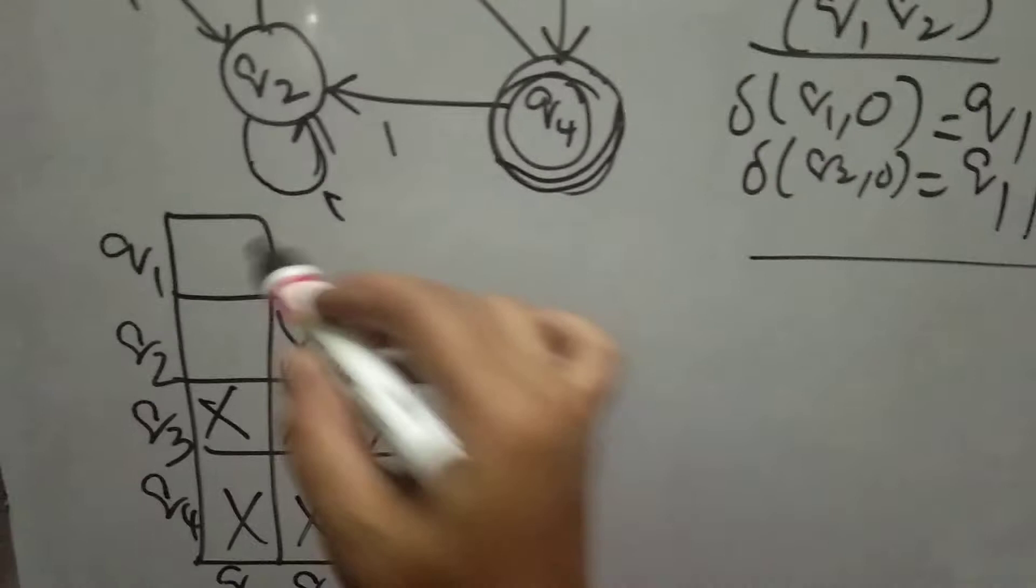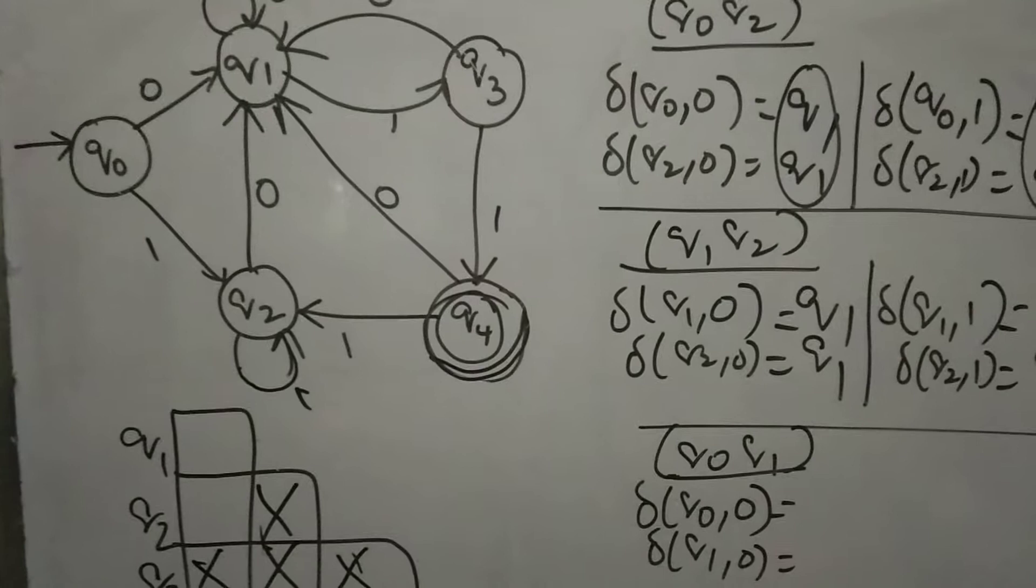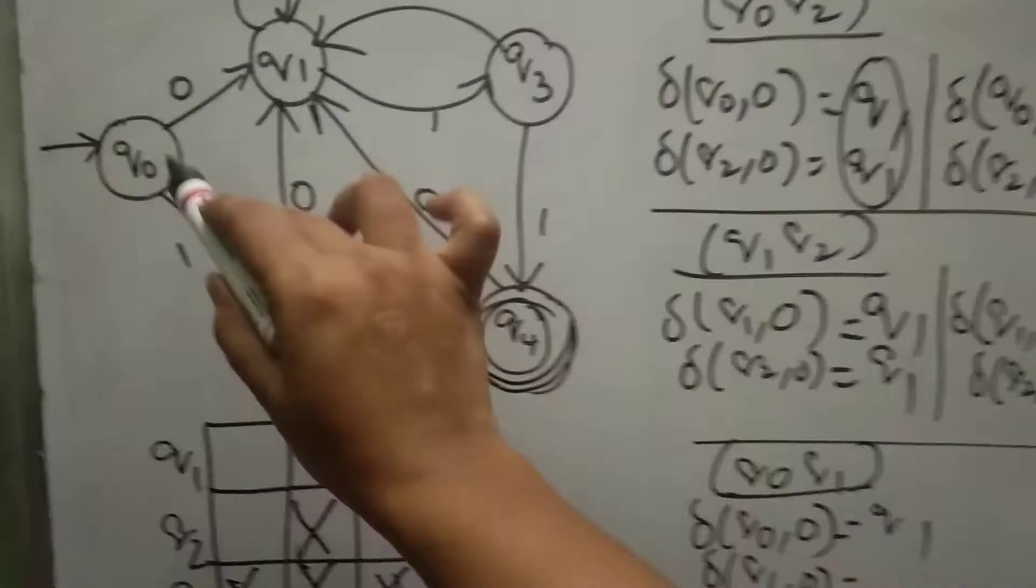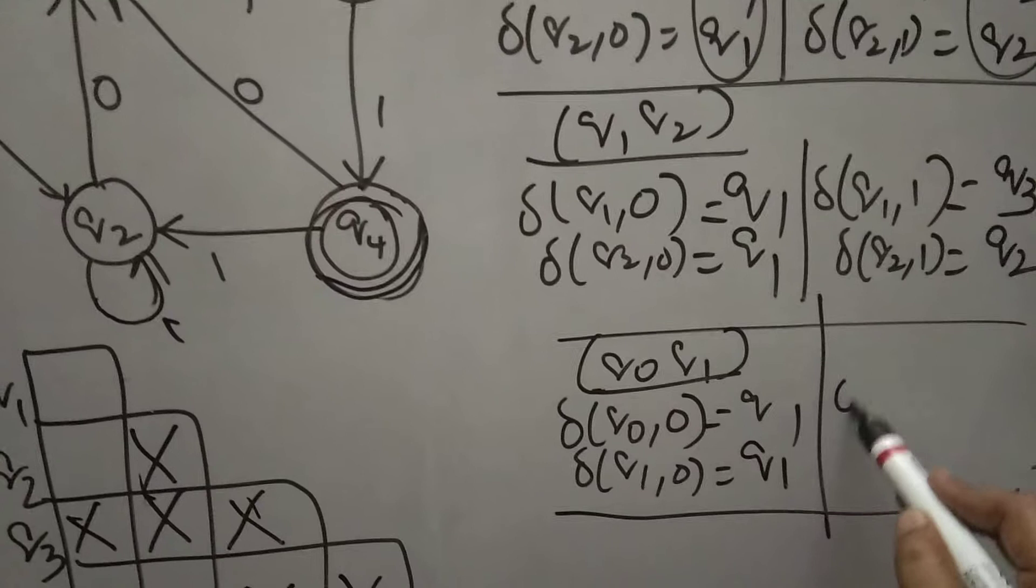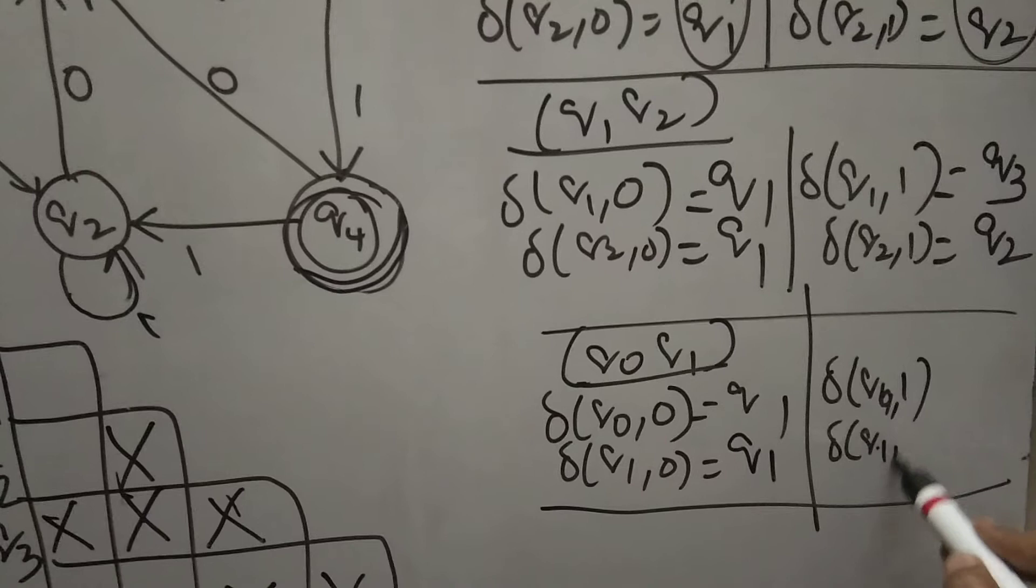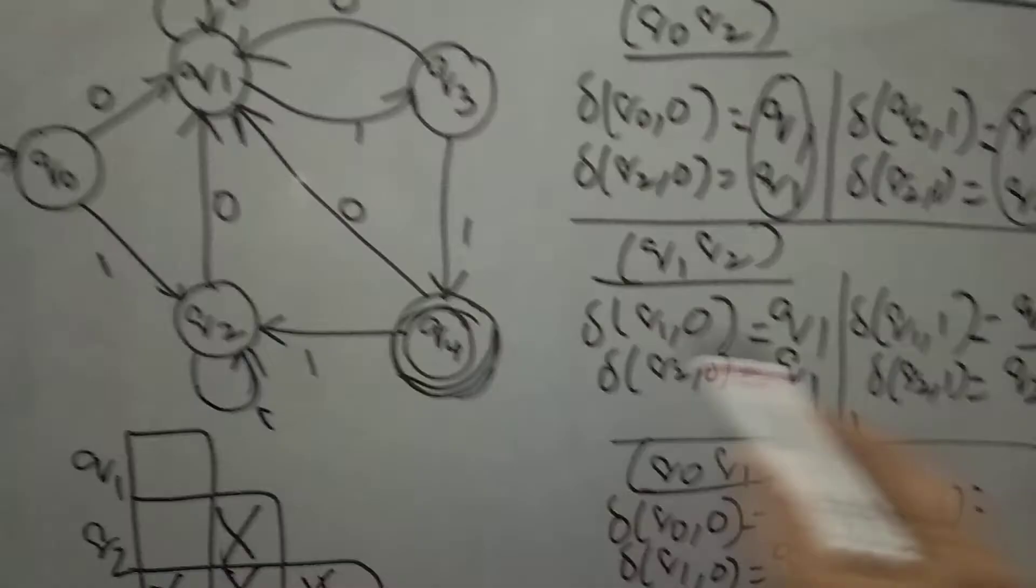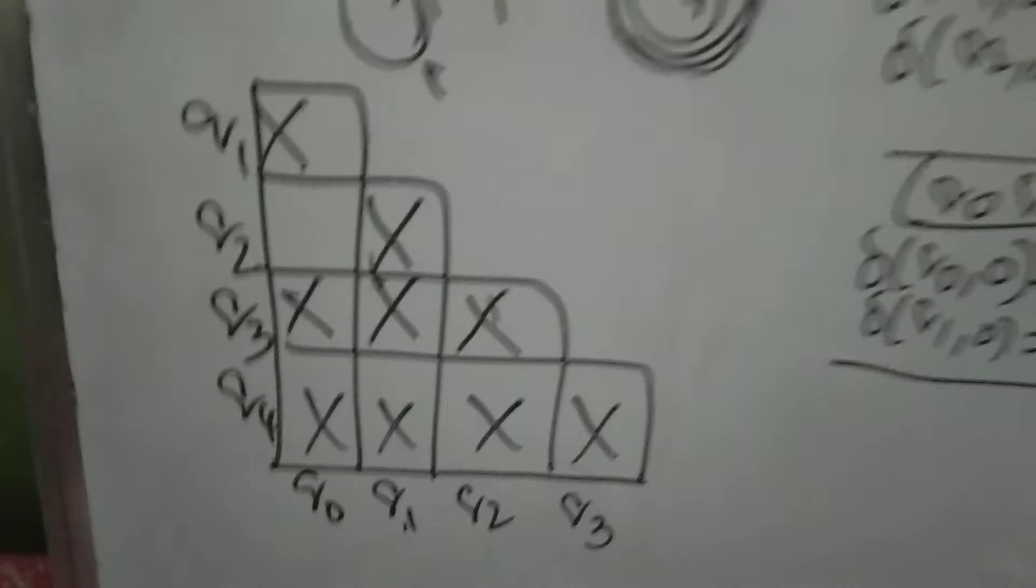Next, the final one, Q0, Q1. Delta of Q0 upon 0, delta of Q1 upon 0. Q0 upon 0 is Q1. Q1 upon 0 is Q1. We cannot mark it. Go for Q0 upon 1, Q1 upon 1. Q0 upon 1 is Q2. Q1 upon 1 is Q3. Check whether Q2, Q3 marked or not. Q2, Q3 is marked, so mark this also. One step complete. What are unmarked pairs you can identify?